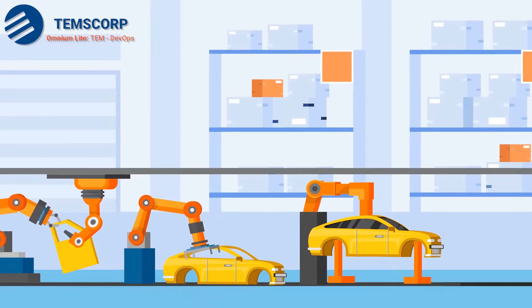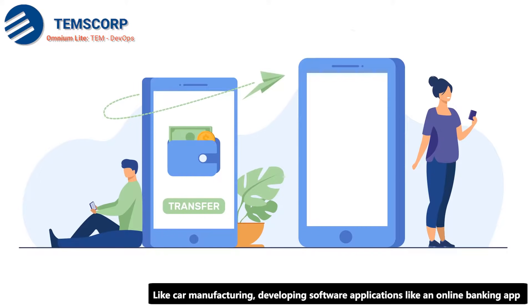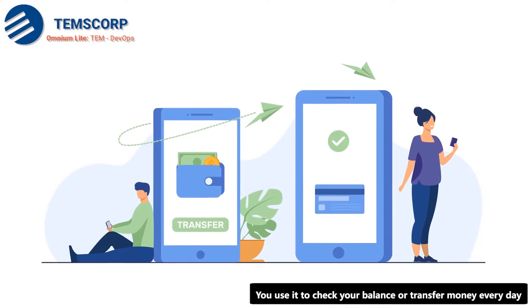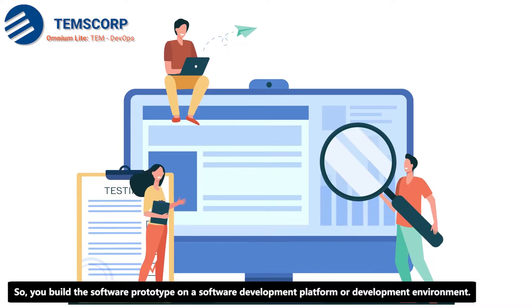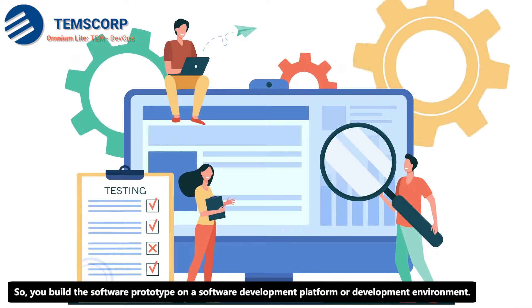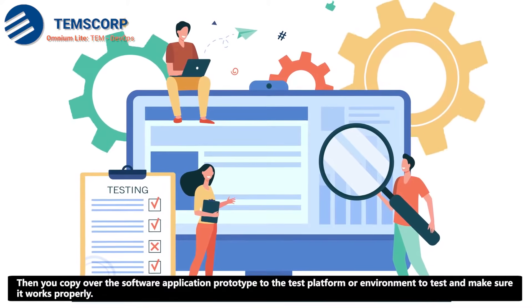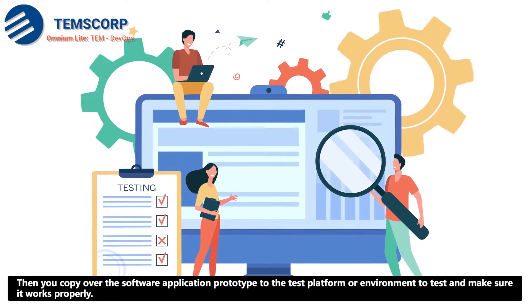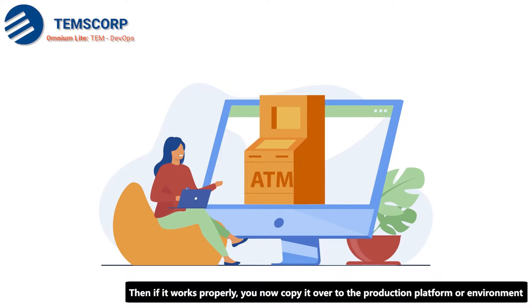Like car manufacturing, developing software applications — such as an online banking app you use to check your balance or transfer money every day — follows a similar process. You build the software prototype on a software development platform or development environment, then copy the application prototype over to the test platform or environment to test and make sure it works properly.